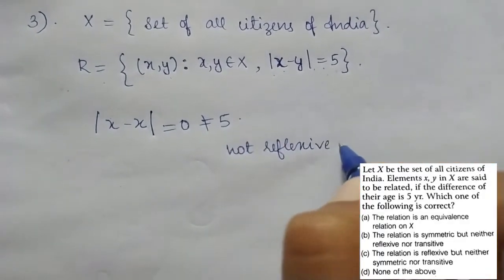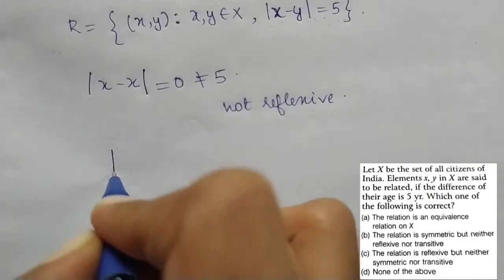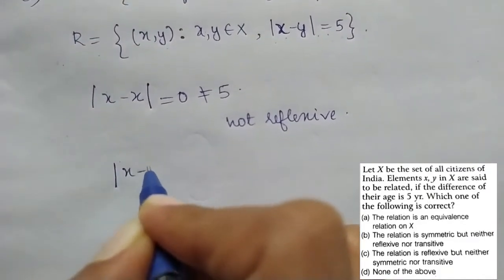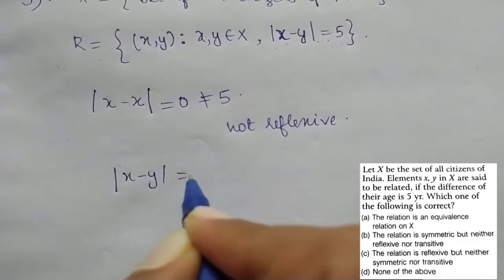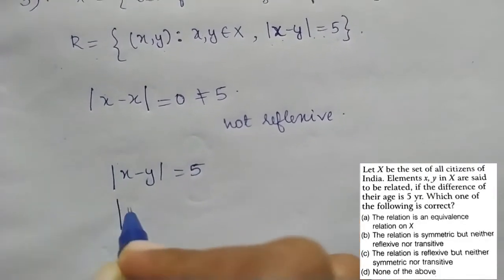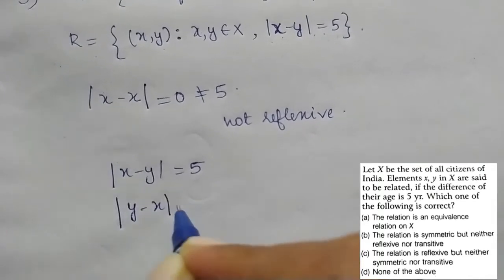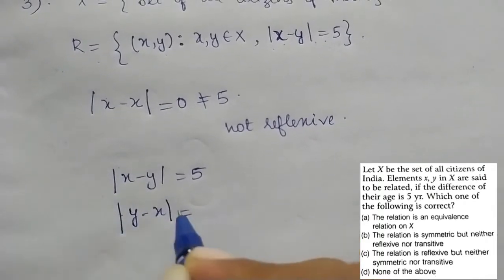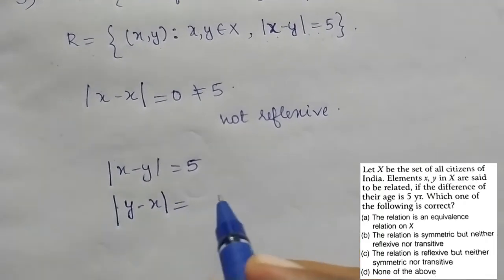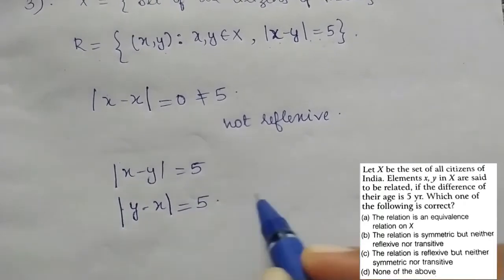What is symmetric? |x − y| = 5 implies |y − x| = 5. It is symmetric.